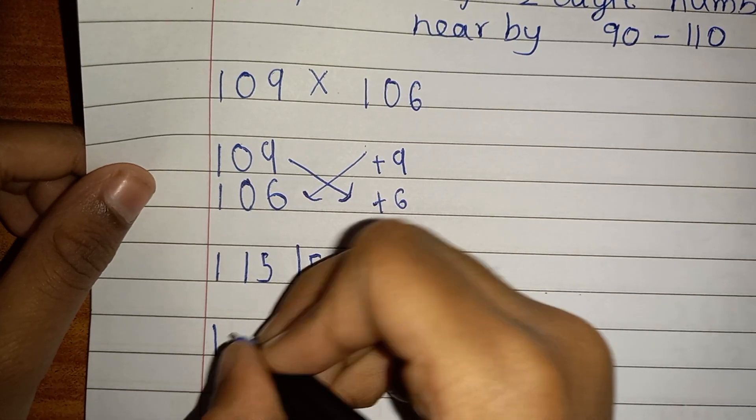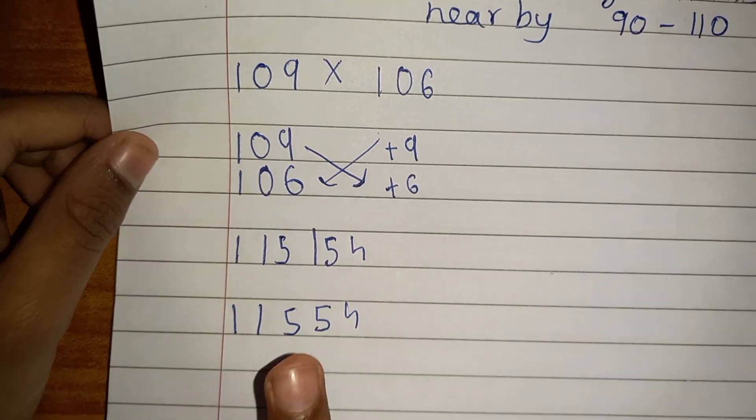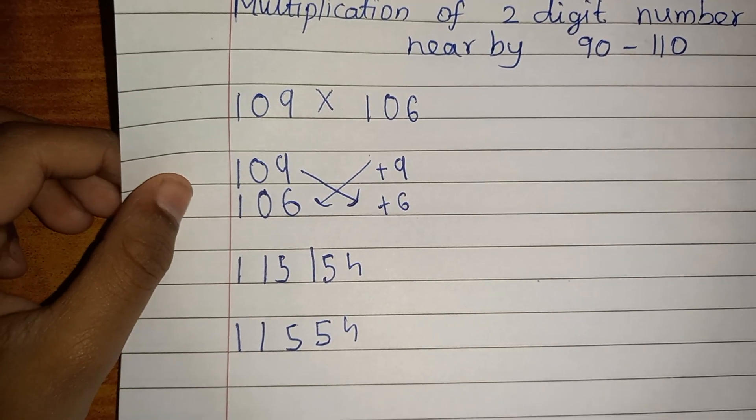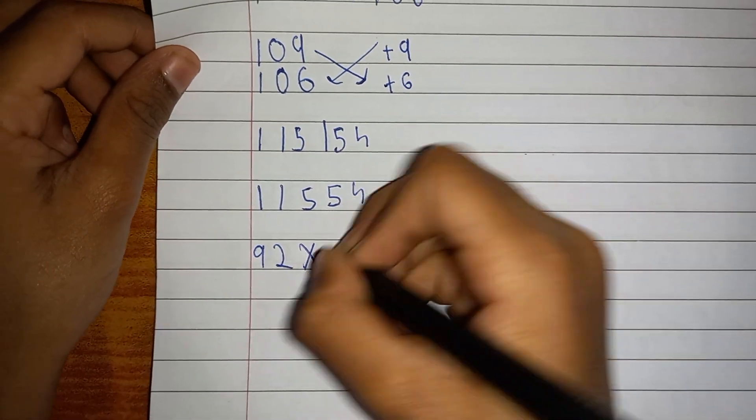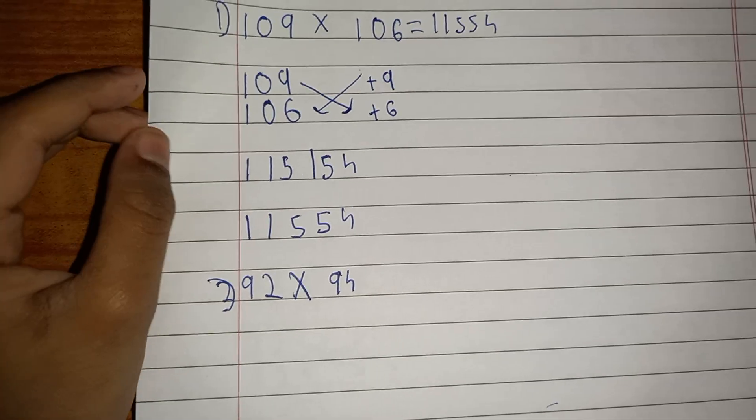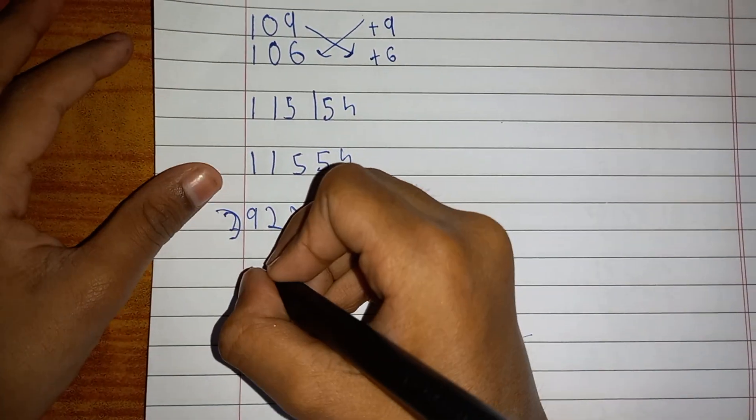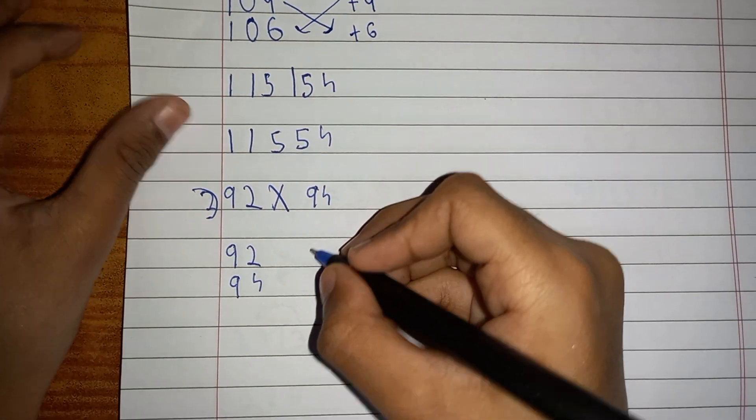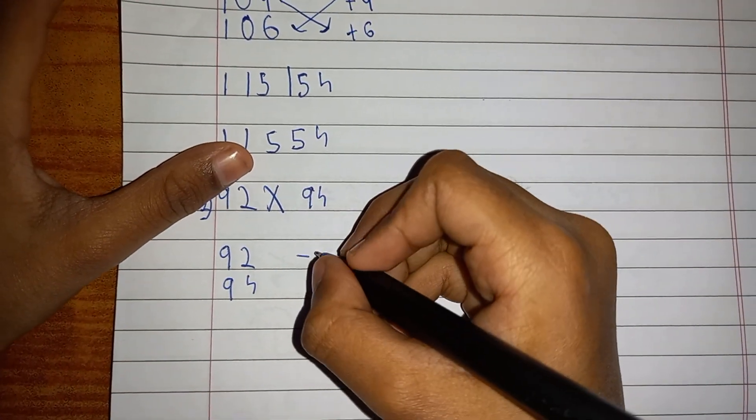So let's go with another example, which is going to be 92 multiplied by 94 this time. So now what you have to do is, both are minus numbers, but first we're going to write the numbers, then we'll discuss about it. Now what you have to do is, it's less than 100, so you have to write minus 8.